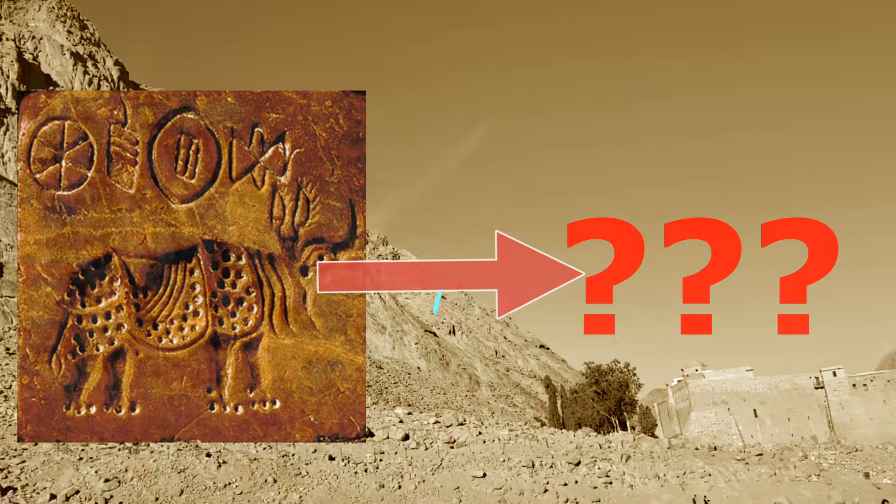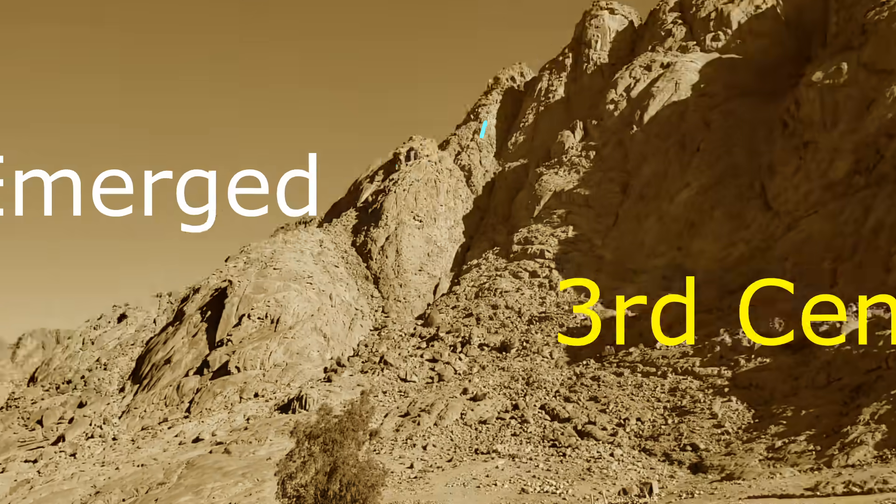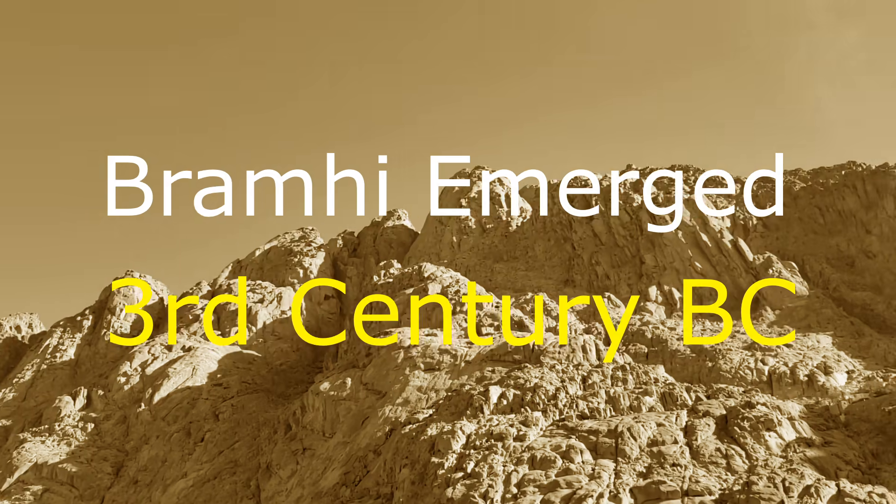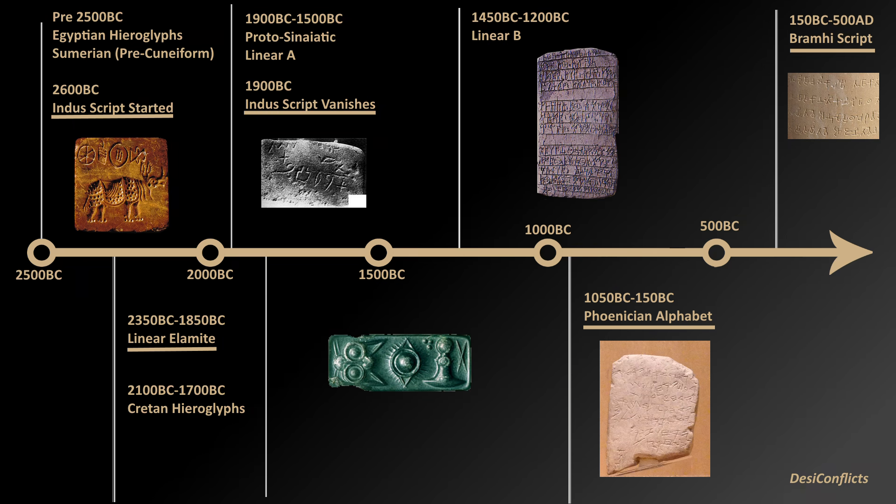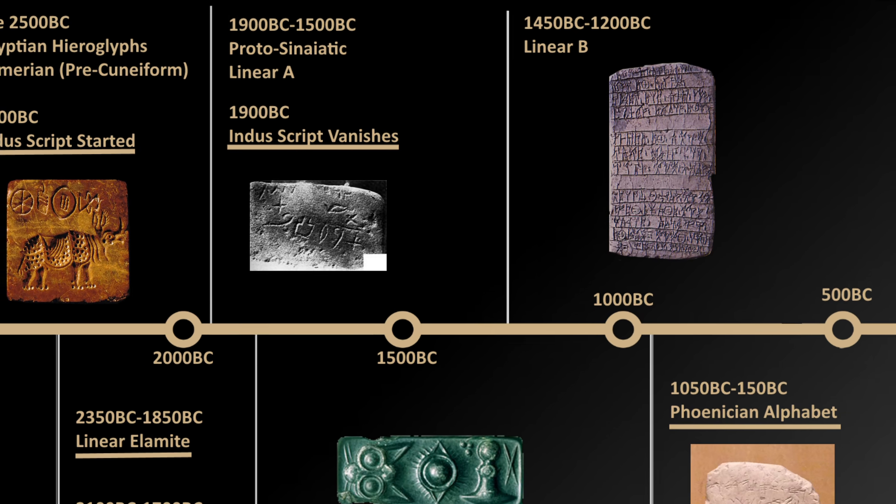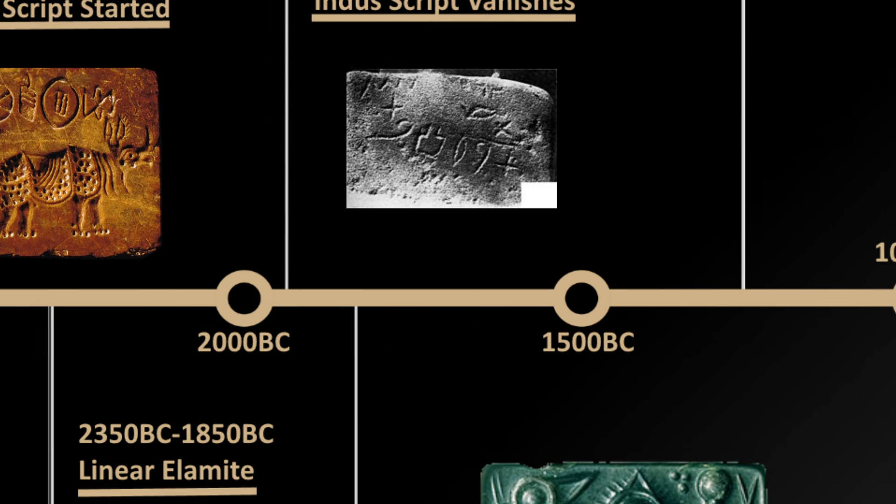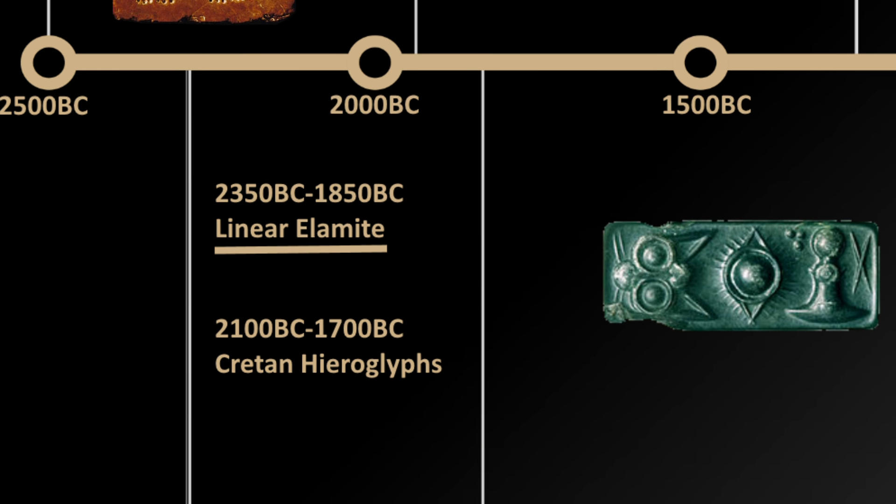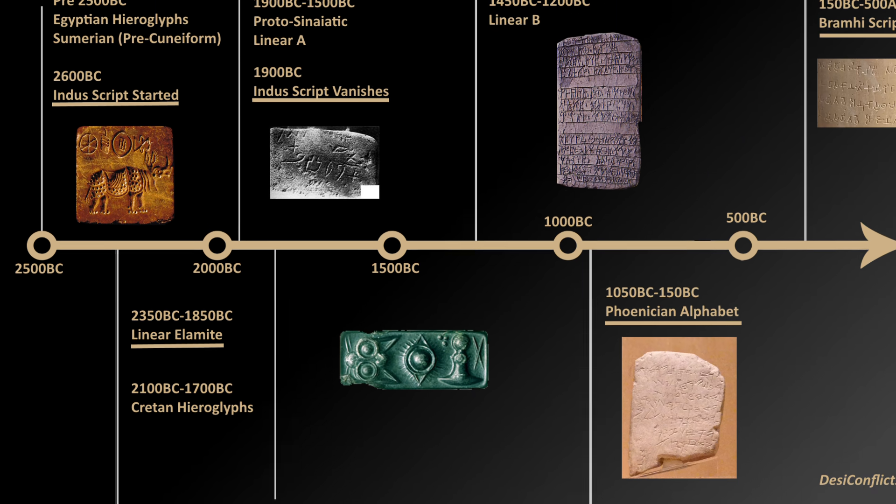Indus script last disappeared in 18th to 16th century BC. And the first inscriptions of Brahmi we have, which is supposed to be its closest relative, is from 3rd century BC, almost 1300 years apart. Other languages that almost co-existed with Indus script are Proto-Syniatic and Linear Elamite, a bit not too far from Indus Valley and also somewhat closer in the timeline.